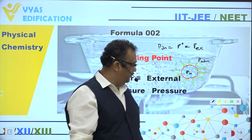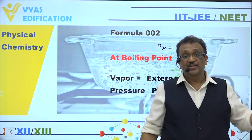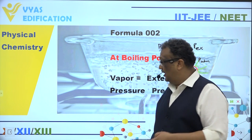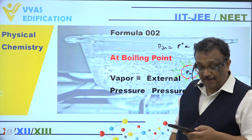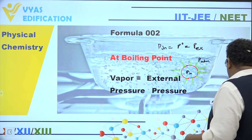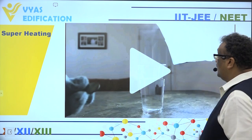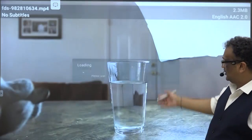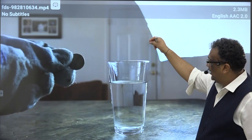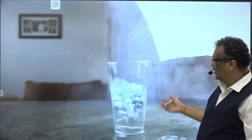Yeh metastable liquid kehlata hai. Superheated liquid ek metastable liquid hai. Isko just disturb kar dijiye — coin daal dijiye, salt daal dijiye — aur aap dekhenge ki woh phir se ubalne lagta hai.